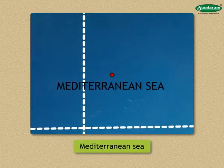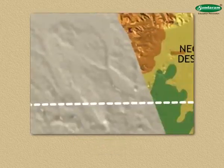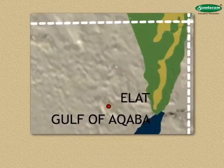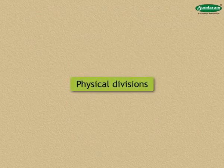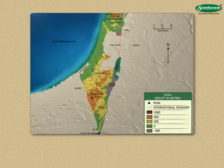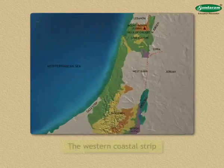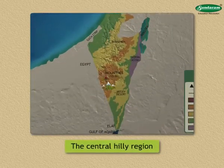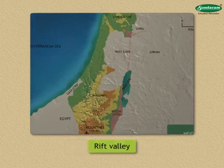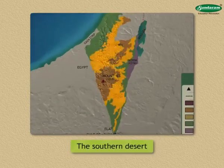The Mediterranean Sea is to the west of this country and the Gulf of Aqaba to its south. In Israel, we see four main physical divisions: the western coastal strip, the central hilly region, the rift valley, and the southern desert.